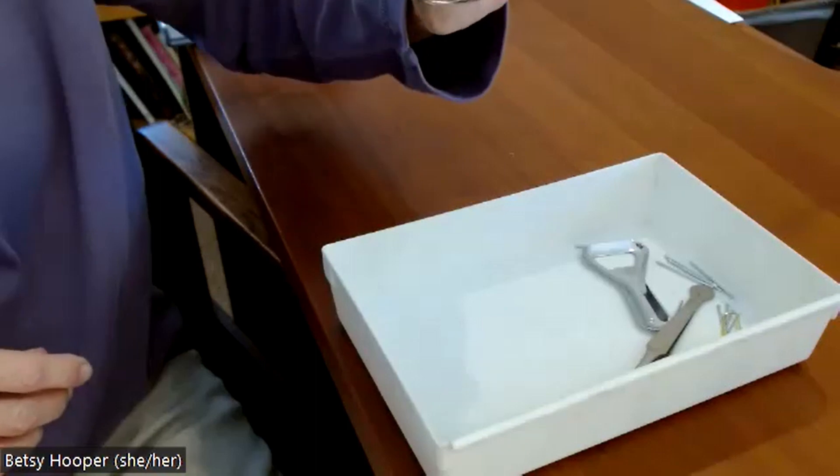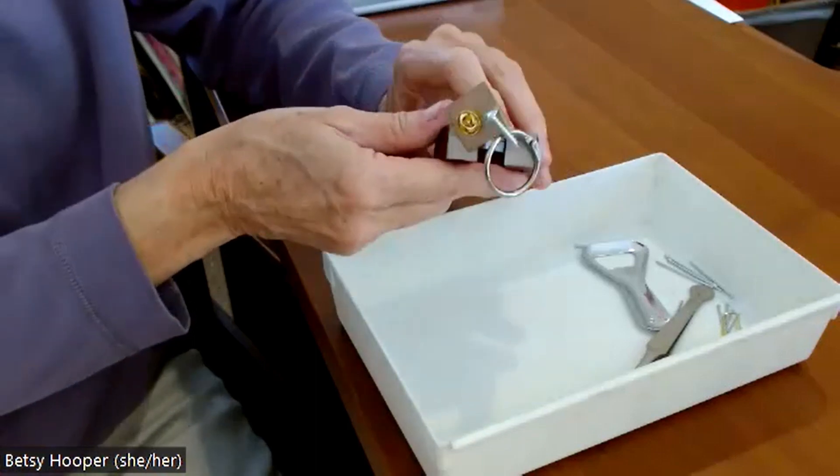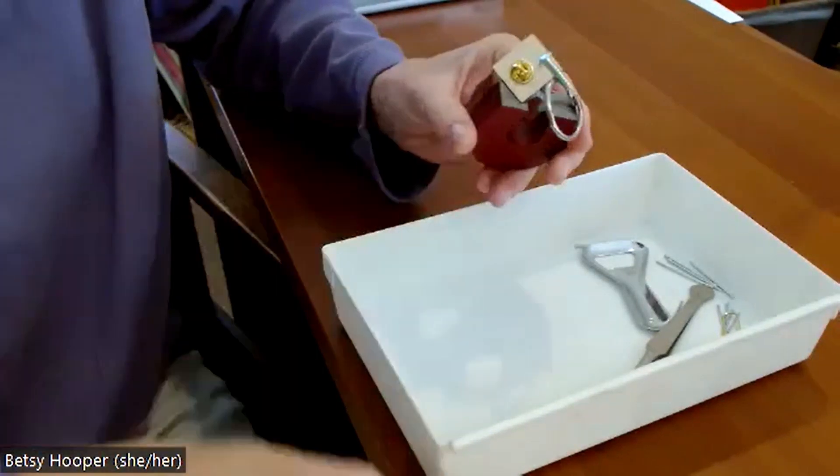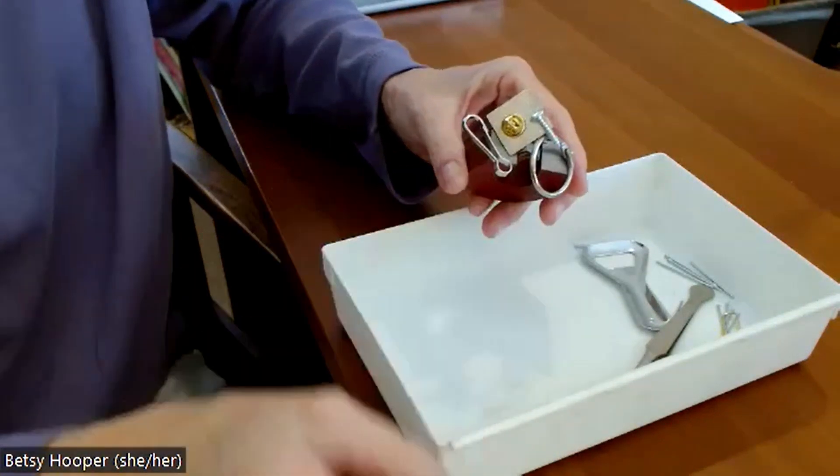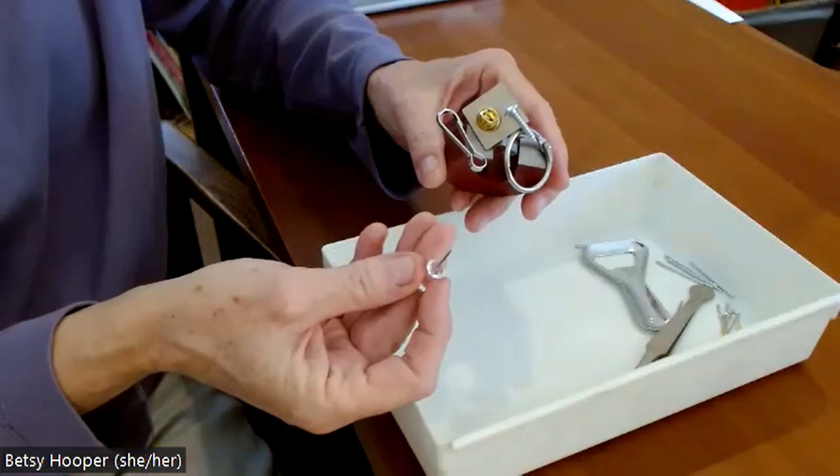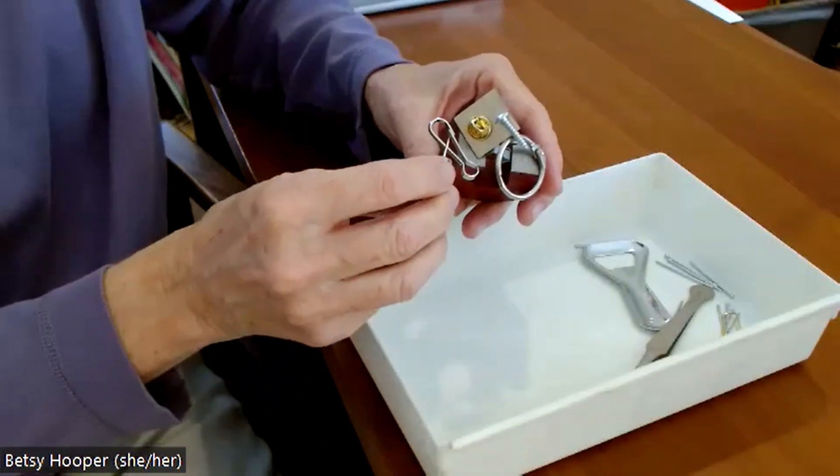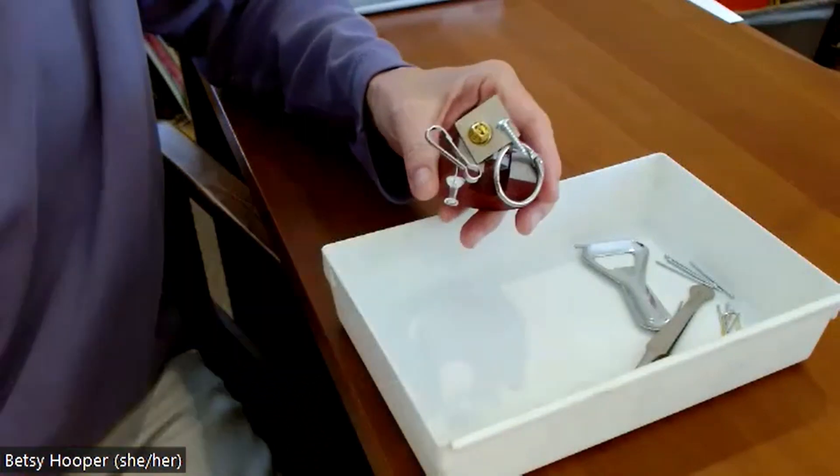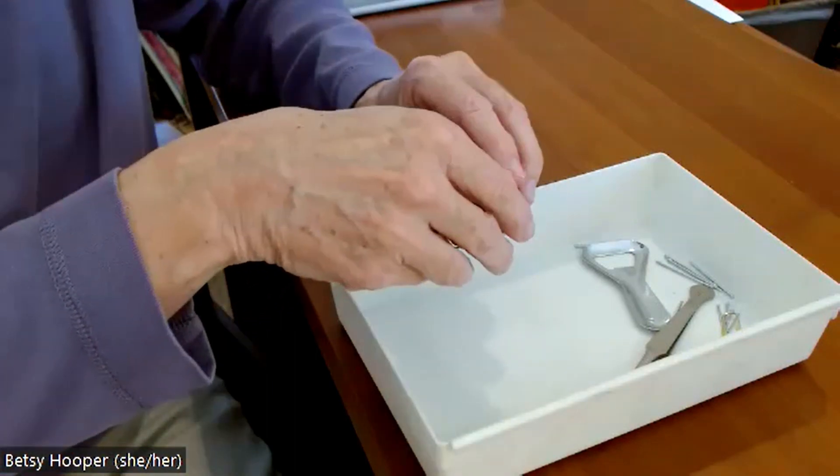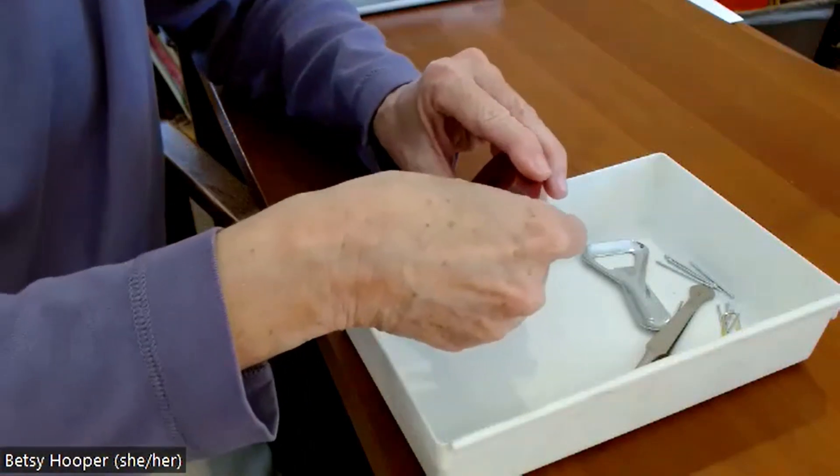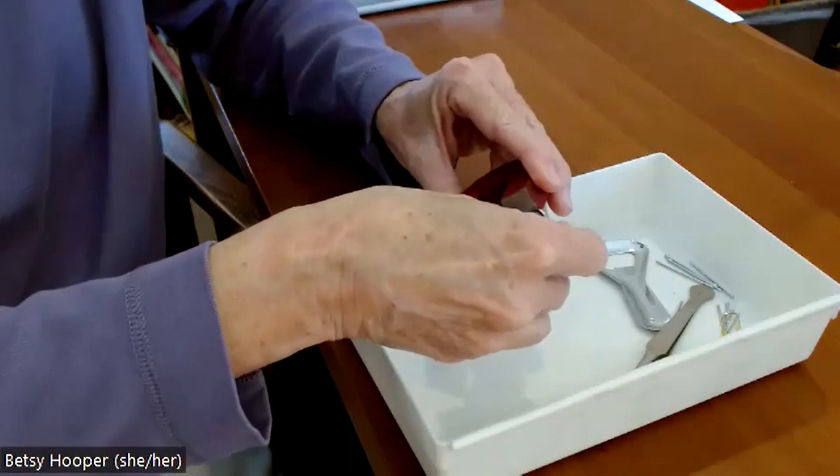I have things that are round and things that are square and things that have spirals on them. Look at that. They all stick as well. Well, I even have little hooks and something that's not all metal. It has some plastic on it too. And look at that, it also is attracted to the magnet.